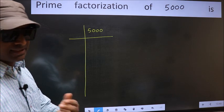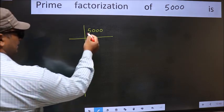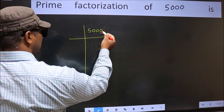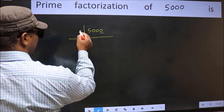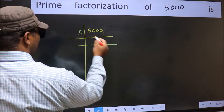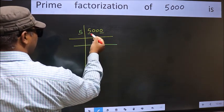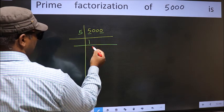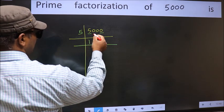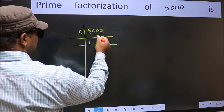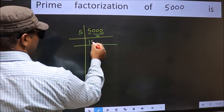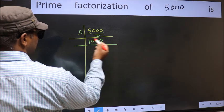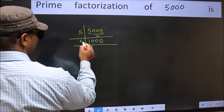Next, in this number, the last digit is 0, so take 5. First number is 5. When do we get 5 in the 5 table? 5 once is 5. Now these 3 zeros as they are. The last digit is 0, so take 5 again.